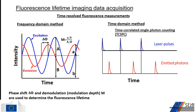Fluorescence lifetime of a fluorophore is commonly determined using frequency domain and time domain data acquisition techniques. Both techniques are quite different in electronics and data acquisition methods. However, mathematically both are equivalent and through Fourier transform, data from one technique can be converted to the other. In the frequency domain method, the intensity of the continuous wave source is modulated at a high frequency up to 100 MHz. Due to this modulation, the fluorescence from the specimen is also modulated at the same frequency, but the emitted signal is phase shifted due to the delay in fluorescence. The fluorescence lifetime is calculated from the phase delay and modulation depth information.